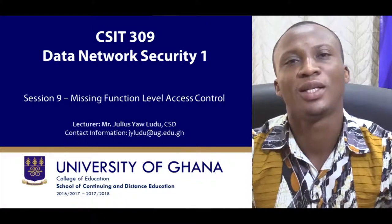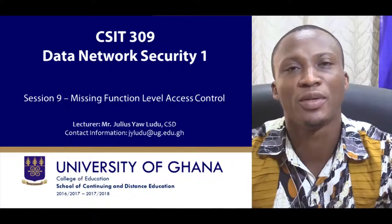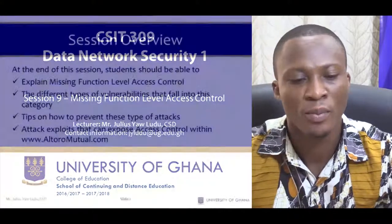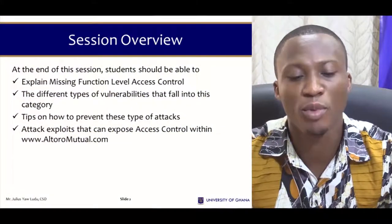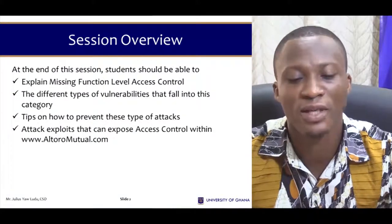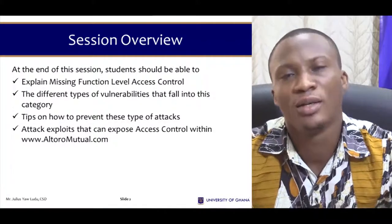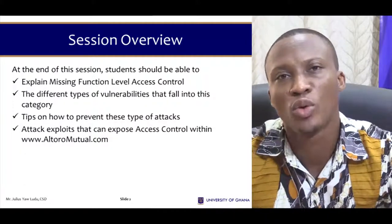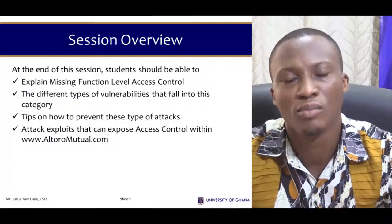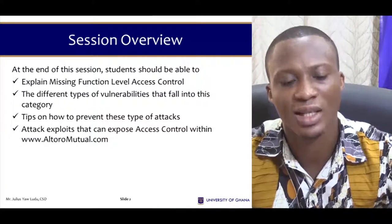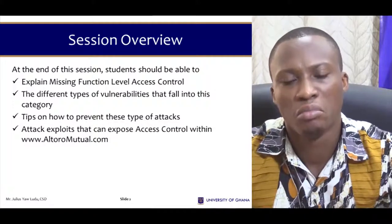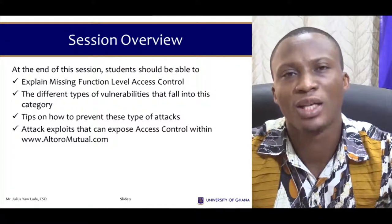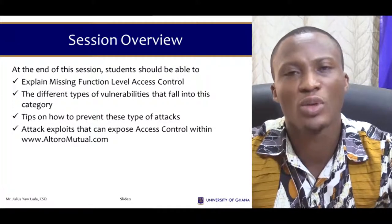Good day, welcome to session 9 of Data Network Security 1. Today we'll be looking at missing function level access control. At the end of this session, you will be able to explain what missing function level access control is, see the different types of vulnerabilities that fall into this category, find ways of preventing this attack, and also exploit a tool which can give us some exposure to what access controls are.